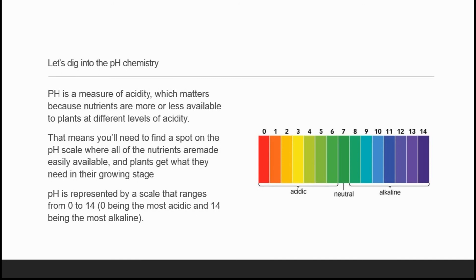pH is a measure of acidity, which matters because nutrients are more or less available to plants at different levels of acidity. That means you'll need to find a spot on the pH scale where all the nutrients are made easily available.